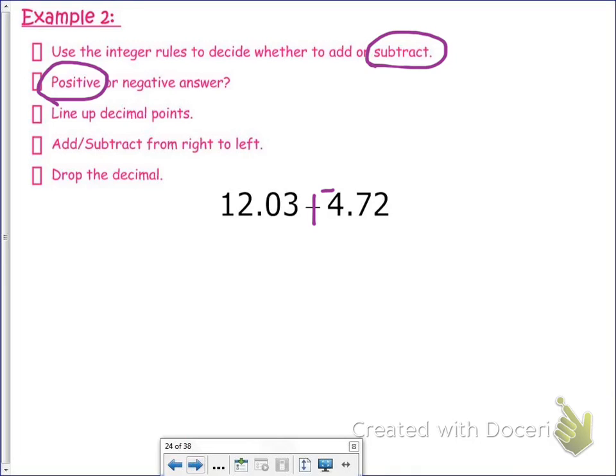We already know that our sign is going to be positive because 12 is bigger than 4. So we have 12.03 minus 4.72. Yet again, notice how those decimals are all nice and lined up right here.